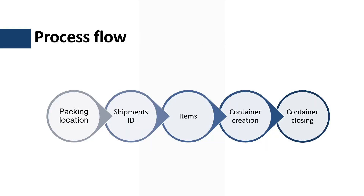The packing process using the Warehouse Management mobile application is not far from the packing process in Dynamics 365 Supply Chain Management. The warehouse worker logs into the mobile device, identifies a packing location, scans a shipment ID to identify items to be packed, creates a new container, and then registers the container as closed.